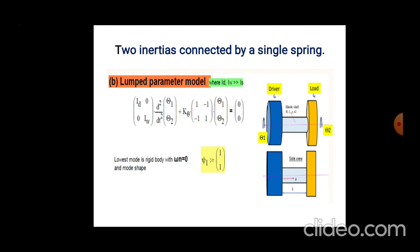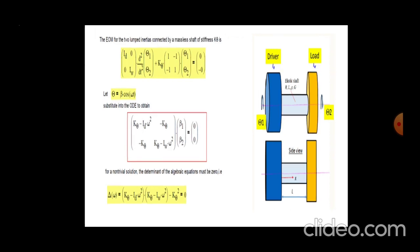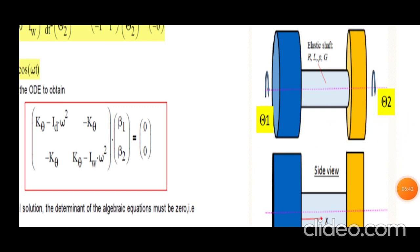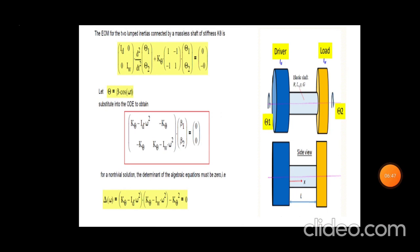The driver and the load are represented by an elastic shaft with angular displacements theta 1 and theta 2. The lowest mode is the rigid body mode where omega n equals zero. Psi 1 equals 1 — that is the mode shape. The figure shows the driver and load, with the equation Id multiplied by the inertia matrix and omega, giving theta and delta theta. The driver and the load components are denoted R, L, P, and G.